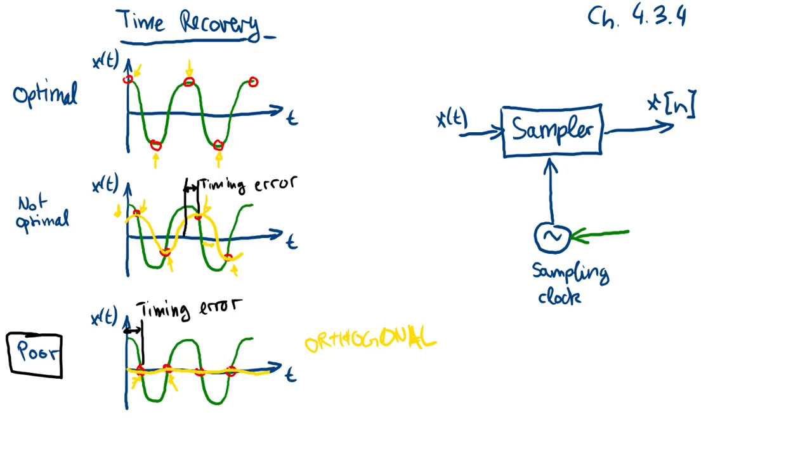What we need to do is to adjust the phase of the sampling clock so that we get the optimal case. We need some kind of controller which detects that we have the non-optimal case here and then it adjusts the phase of the sampling clock so that the timing error is minimized. And in the optimal case, the timing error will become zero.